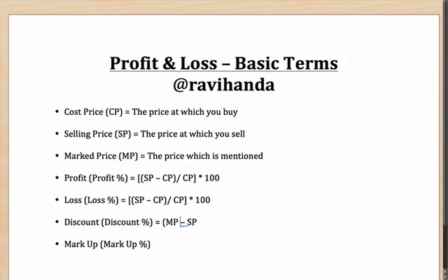Now if you have to calculate discount in terms of percentage, it is very similar to the profit and loss formula. But the key point to note is that discount is always calculated on the marked price — that is the difference. Profit and loss are always calculated on the cost price, whereas the discount is always calculated on the marked price.